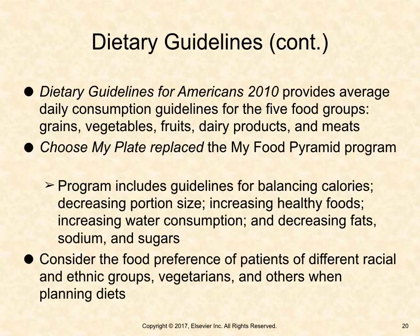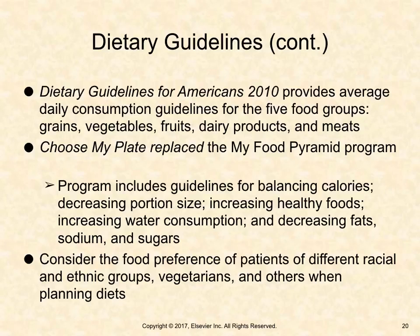The Dietary Guidelines for Americans 2010 provides average daily consumption guidelines for the five food groups: grains, vegetables, fruits, dairy products, and meats. Choose MyPlate replaced the MyFood Pyramid Program, including guidelines for balancing calories, decreasing portion size, increasing healthy foods, increasing water consumption, and decreasing fats, sodium, and sugar. Nurses should consider the food preferences of patients of different racial and ethnic groups, vegetarians, and others when planning diets.